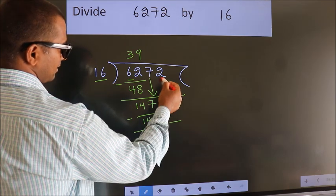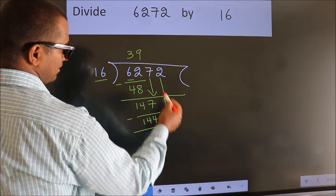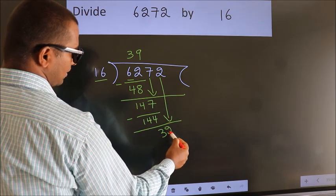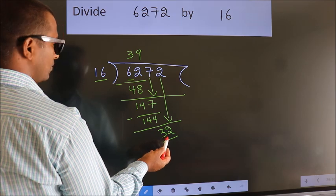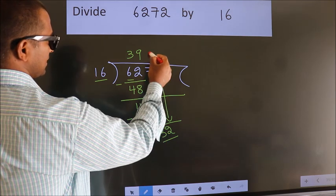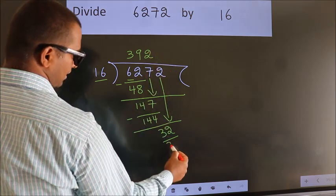After this, bring down the beside number. So, 2 down. So, 32. When do we get 32? In 16 table, 16 twos, 32.